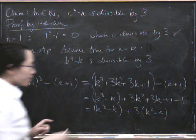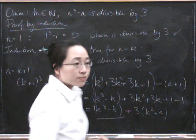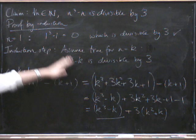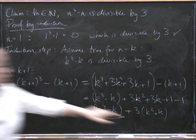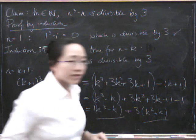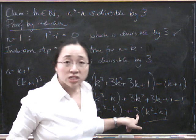But look. We know that this bit is divisible by 3 because that was our assumption. And we know that this bit is divisible by 3 because it's 3 times something.